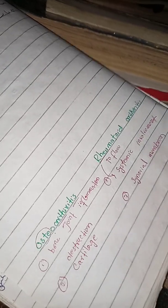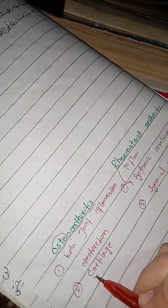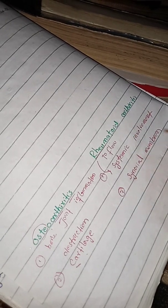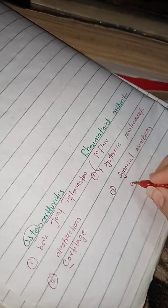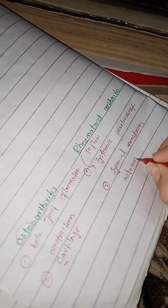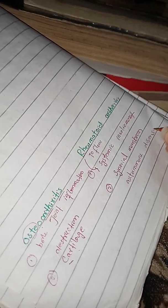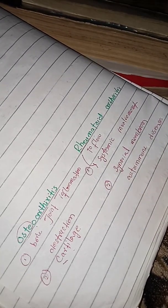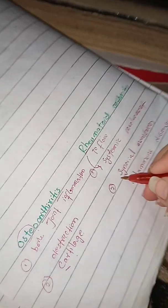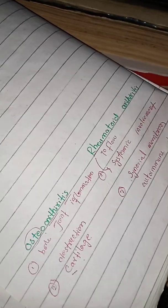So the main difference is that osteoarthritis involves the cartilage of the bone, while rheumatoid arthritis involves the synovial membrane. Rheumatoid arthritis is an autoimmune disease, meaning the body's own immune cells destroy the synovial cells — the cells that make up the synovial membrane.